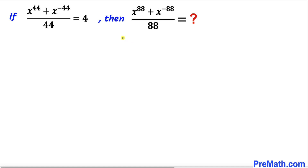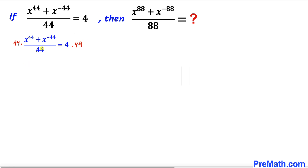Let's go ahead and get started and focus on this equation first. Let's remove its fraction by multiplying both sides by 44. On the left hand side and the right hand side, this 44 and this 44 cancel each other out, so we end up with x^44 plus x^(-44) equals 176. Now let's take a square on both sides.